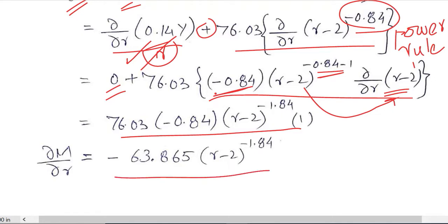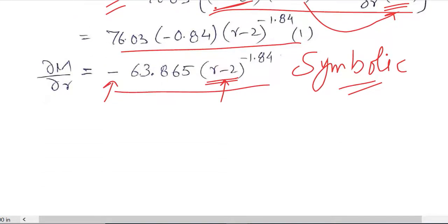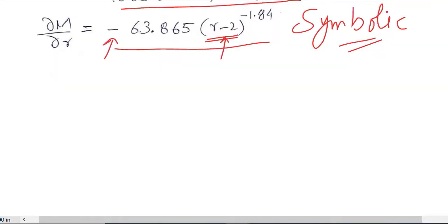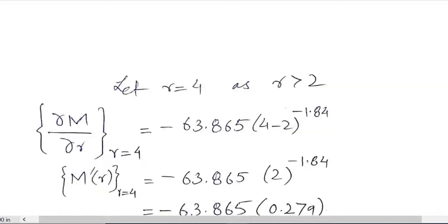So this is the answer which is still symbolic in nature, it is not numeric, so it's not the best form in which we can interpret the results. Yes we can see a negative sign but still we don't have any confirmation of what will happen with this. So following the given caveat that the value of r is greater than 2, we are going to put a value here.